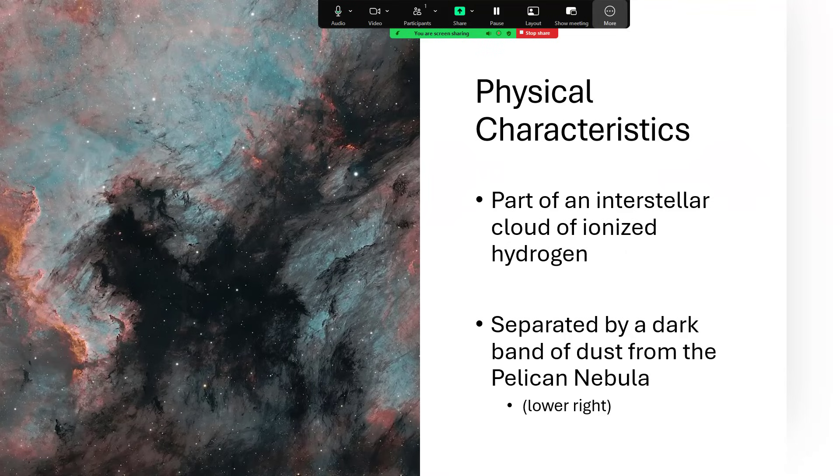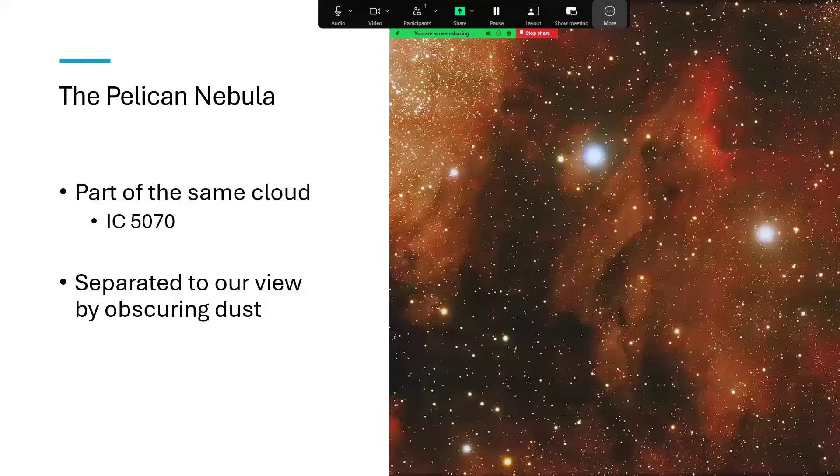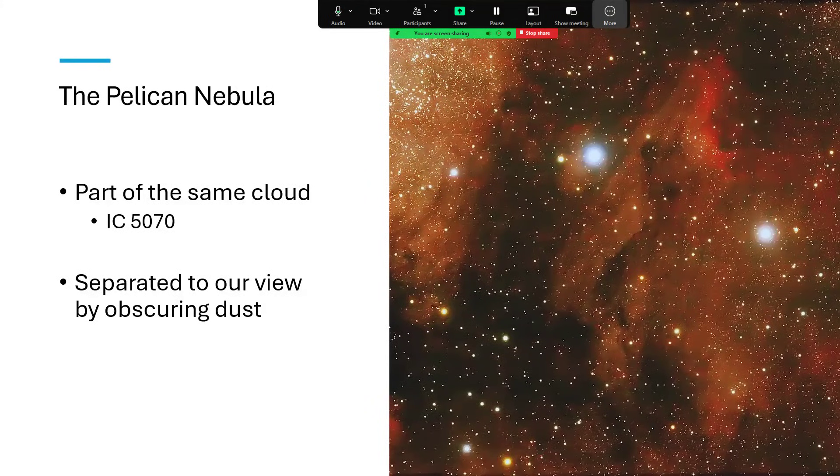The dust lane in the middle there is carving them in two. Here again is another photograph of IC 5070 the Pelican nebula. Why it's called the Pelican nebula I have no idea because I cannot see a pelican. Perhaps somebody can work out how to make a pelican out of that for me.